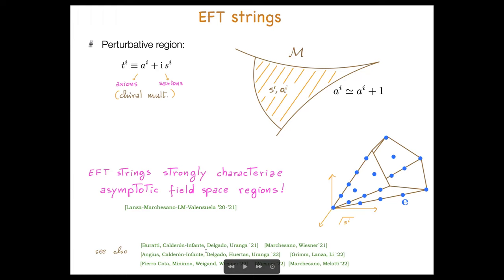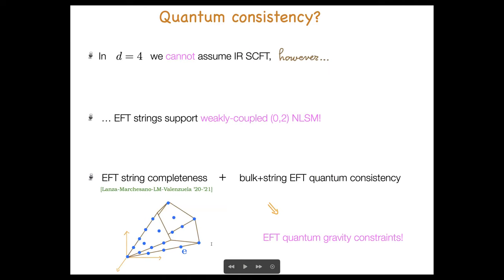In this talk, I would like to discuss this most recent paper with Niccolò and Timo, in which we address the question of what the quantum consistency of these EFT strings can tell us about the bulk sector. As I tried to explain, in this case we do not have control over the infrared physics of these strings, so in particular we cannot assume that they support a flow in the infrared to some superconformal field theory.